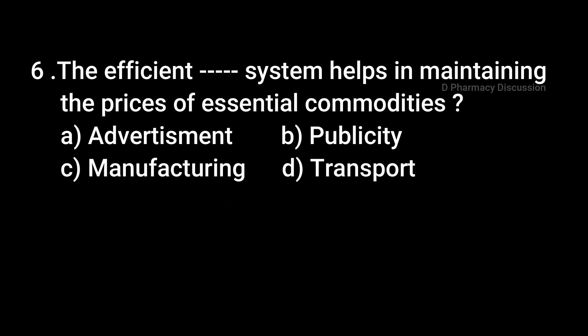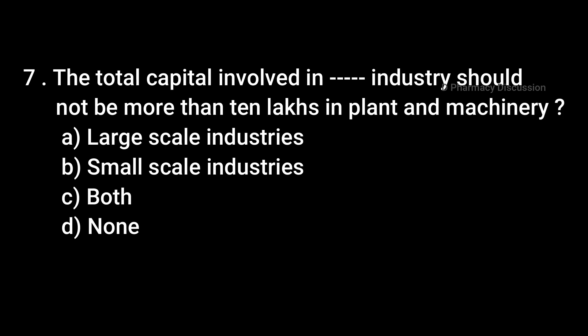Question 6: The efficient DASH system helps in maintaining the price of essential commodities — Option A: Advertisement, B: Publicity, C: Manufacturing, D: Transport. Correct answer is Option D: Transport. Question 7: The total capital involved in a DASH industry should not be more than 10 lakhs in plant and machinery — Option A: Large scale industries, B: Small scale industries, C: Both, D: None. Correct answer is Option B: Small scale industry.